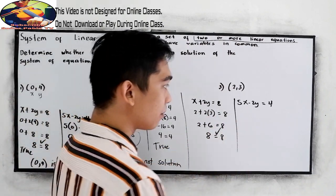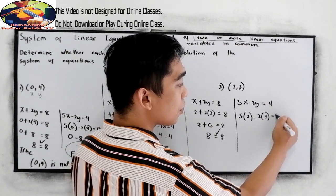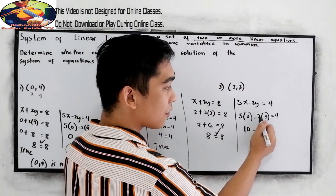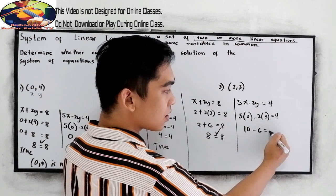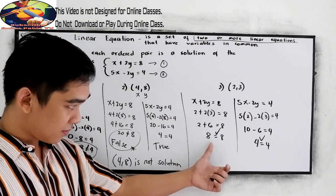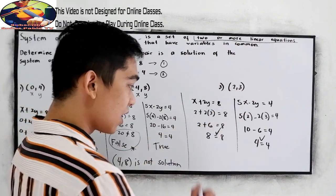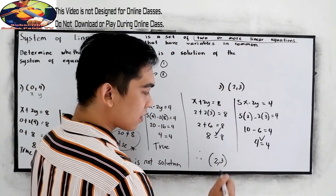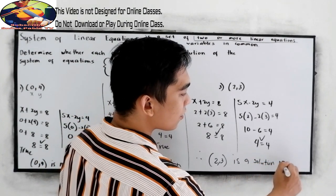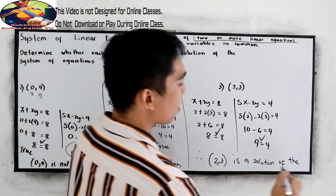Now let us check the other equation: 5 times 2 minus 2 times 3 equals 4. That gives 10 minus 6 equals 4, which is also true. So both equations are true when x equals 2 and y equals 3. Therefore, (2, 3) is the solution of the system of equations.